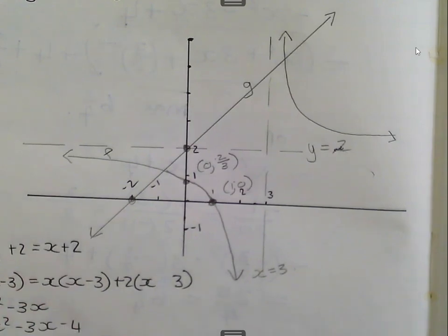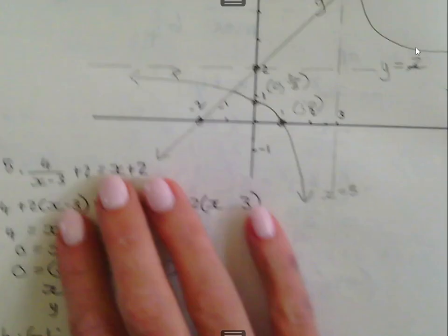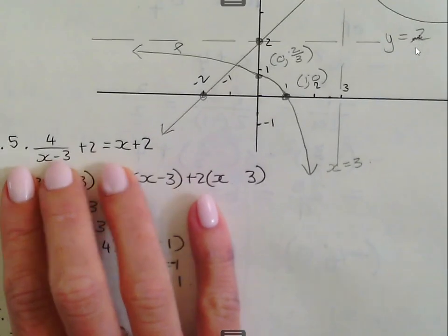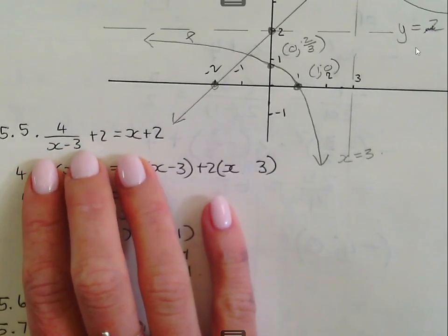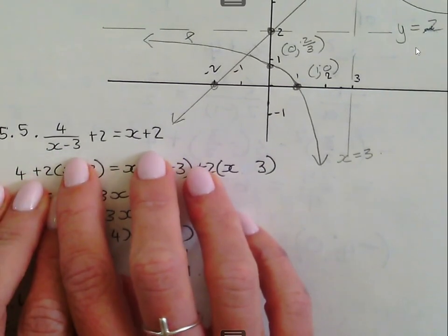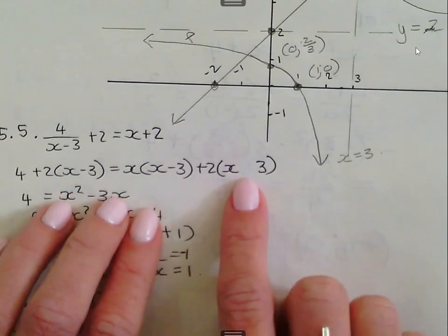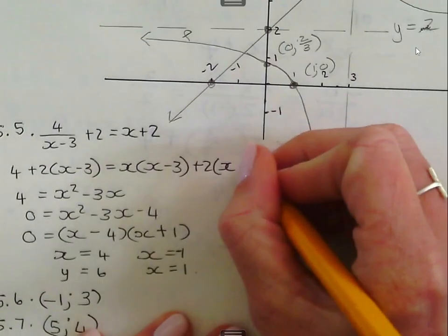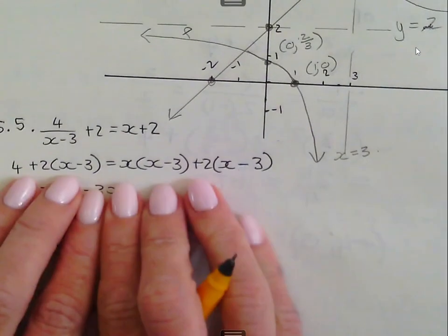Then at number 5.5, they asked you to calculate the x-coordinate of the points of intersection of f and g. So when we want to calculate that, then we let them be equal to each other. I told you we don't like a fraction, so we multiply each term with the denominator.